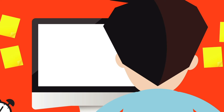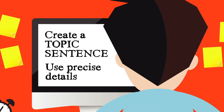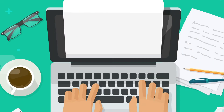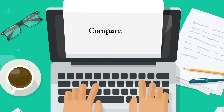In the next paragraph, you're going to create a topic sentence and introduce the first rollercoaster you researched. Use precise details — you'll have plenty of details to choose from. In the paragraph after that, give your topic sentence and then introduce the second rollercoaster you researched. Again, use precise details. In the next paragraph, compare the two rollercoasters.